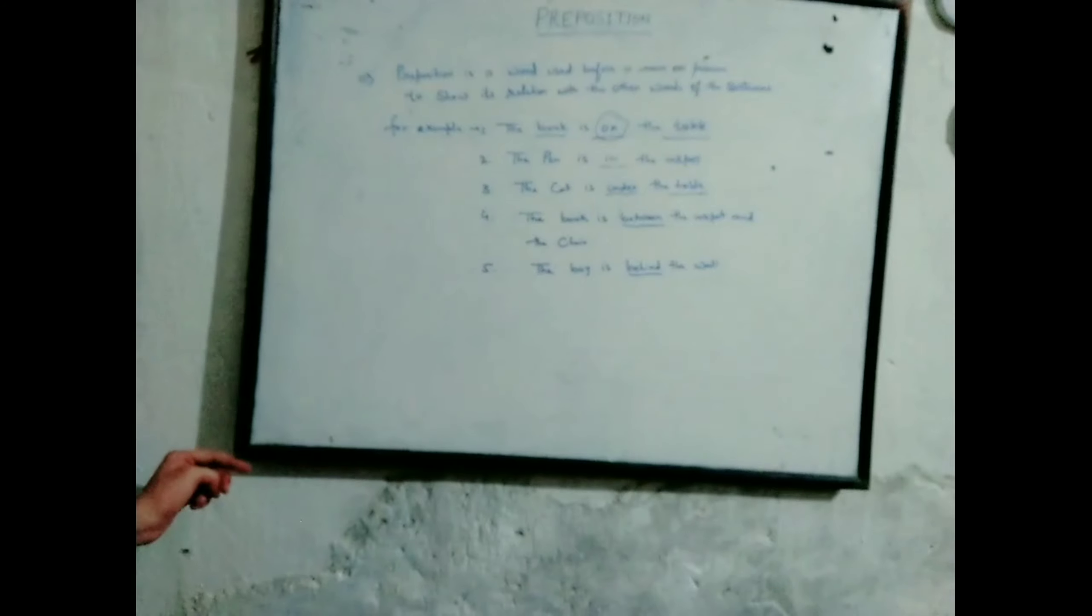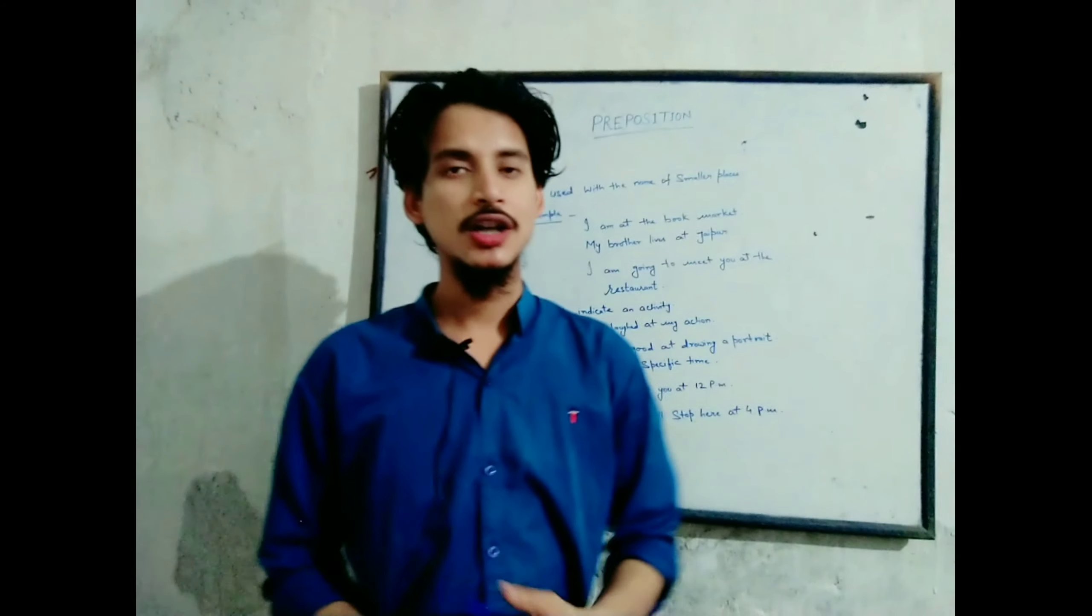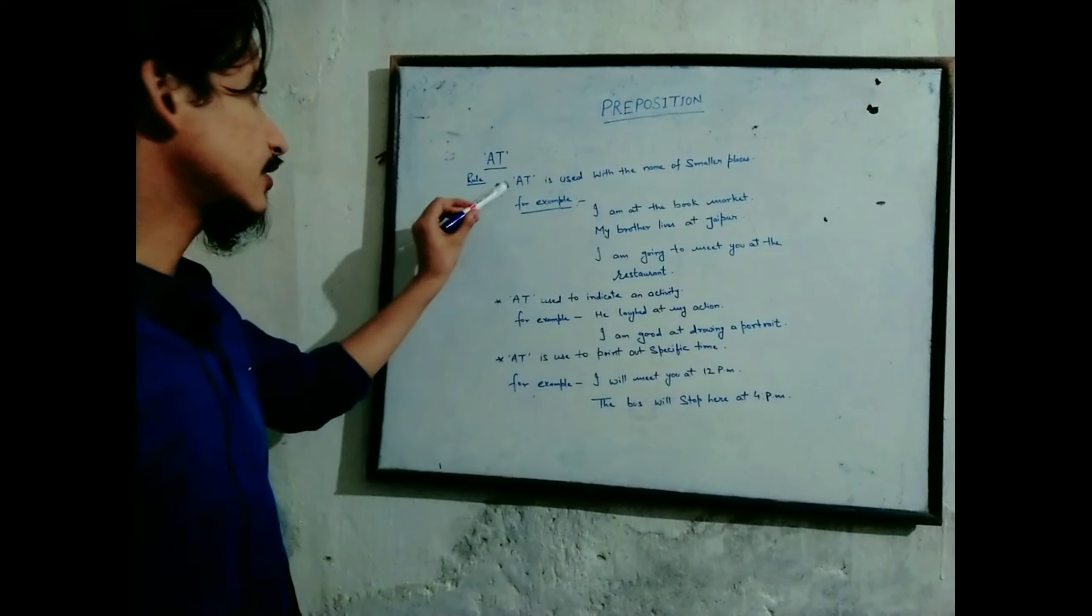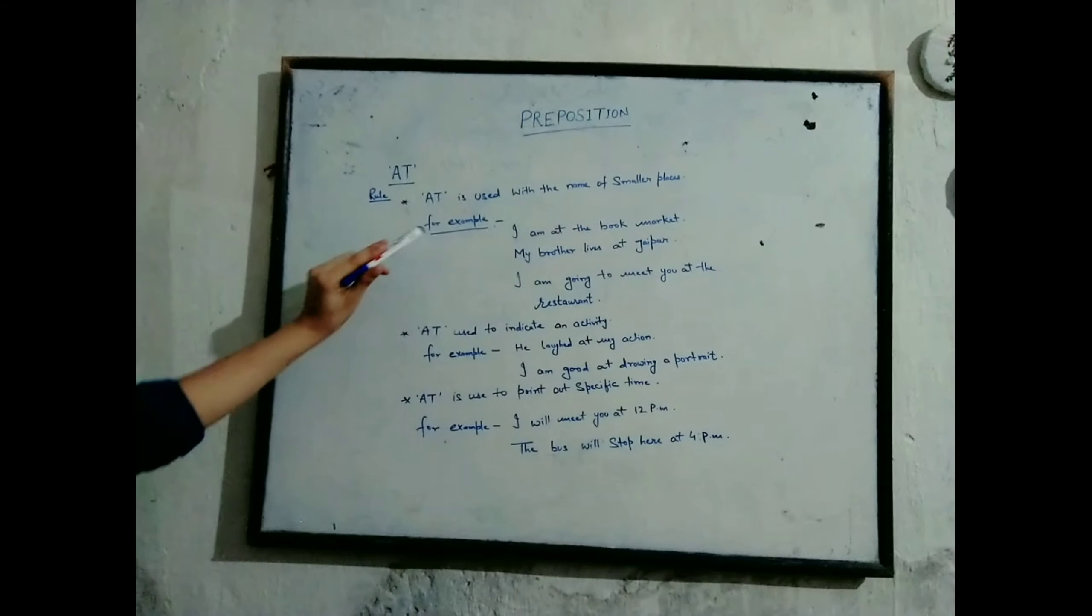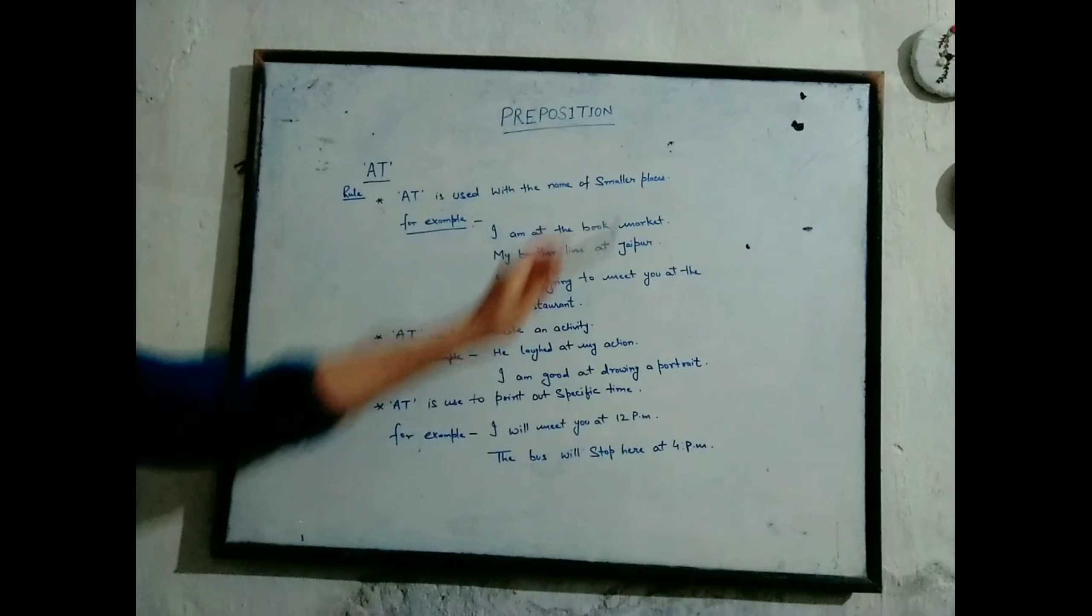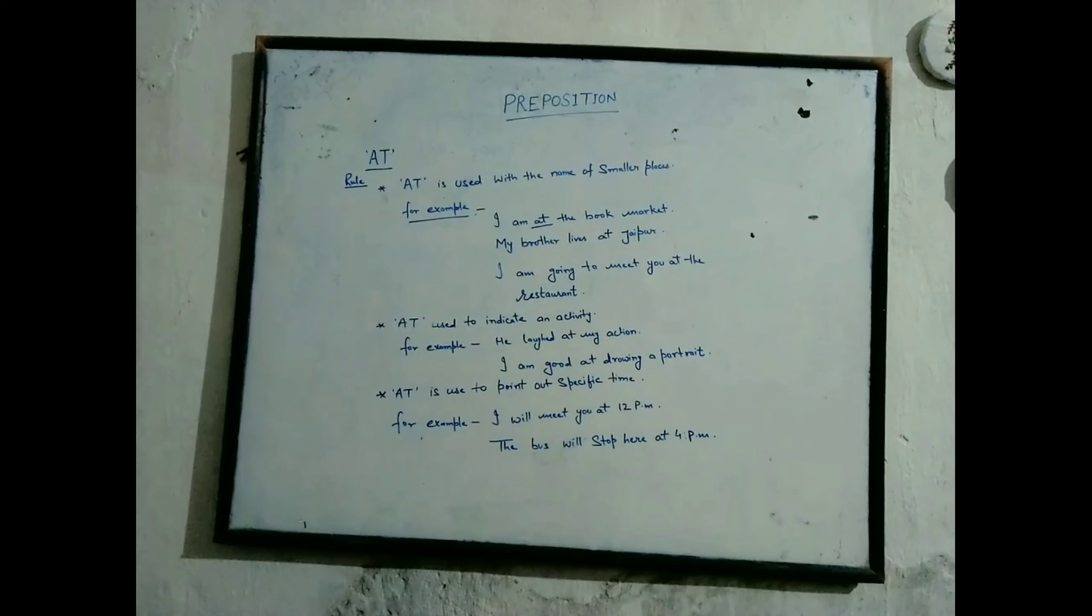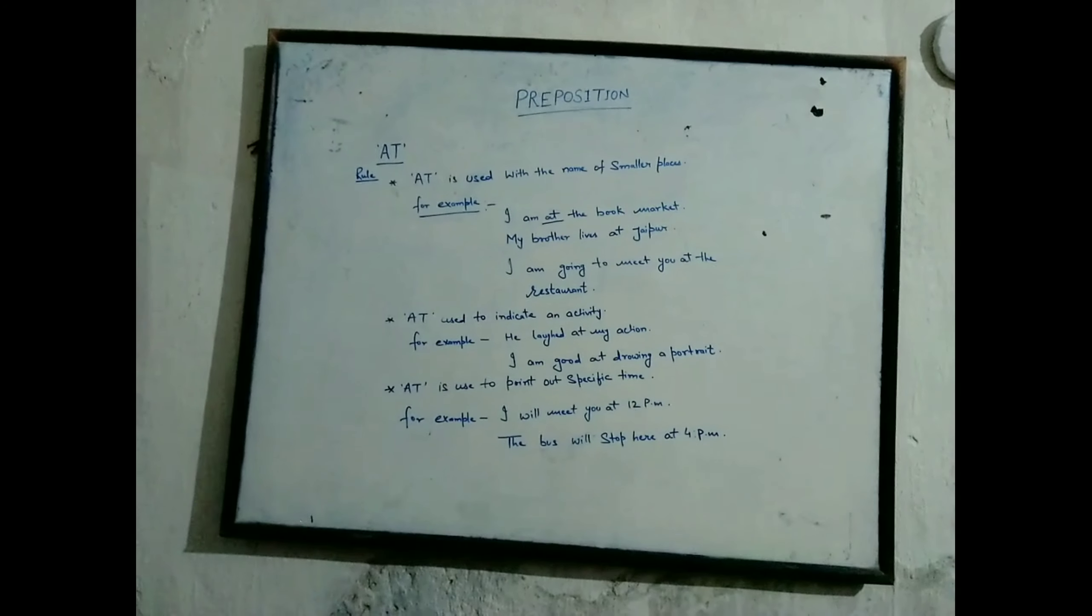Now let's talk about the rules of 'at'. 'At' is used with the name of smaller places. For example, I am at the book market. In here the book market is a smaller place. My brother lives at Jaipur. I am going to meet you at the restaurant.